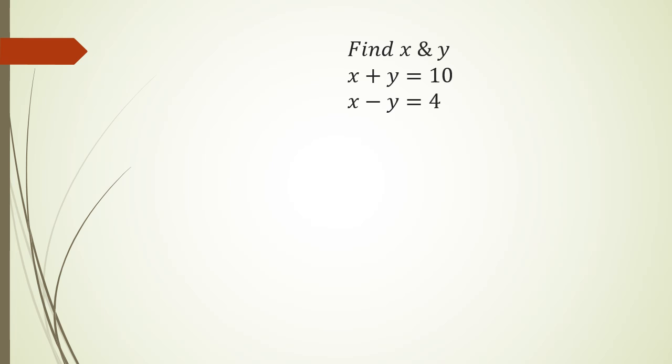Right now you've got this equation x plus y equals 10 and x minus y equals 4. What you'll notice is that the coefficients of x is 1 and the coefficient of y is also 1. So what you can do in this case is you can actually add the two equations. I want you to add the x's, then add the y's, and then finally add the numbers.